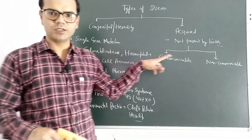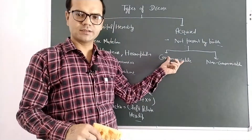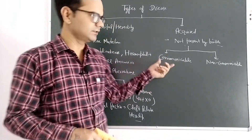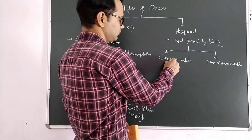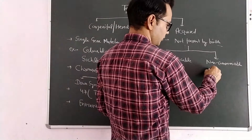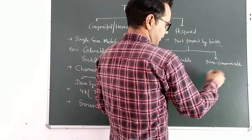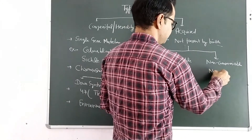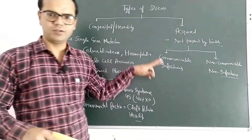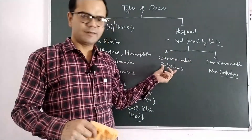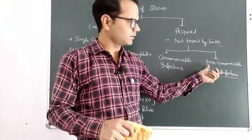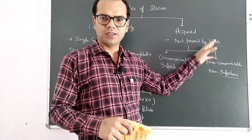Communicable diseases, as the name indicates, pass from an infected person to a healthy person — so we can say these are infectious diseases. Non-communicable diseases don't pass from an infected person to a healthy person, so these are non-infectious diseases. The disease remains in the same person and is not transmitted to others.